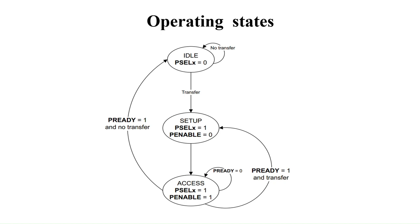Some signals must not change during the transition between setup and access states, and between cycles in the access state. These are: PADDR, PPROT, PWRITE, PWDATA, and PSTRB. Exit from the access state is only controlled by the PREADY signal — when PREADY is zero it remains in access state; when PREADY is one, it transitions to the next state based on transfer status. We will continue discussing other slides in the next session.